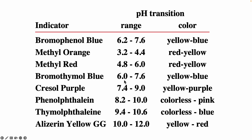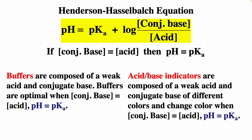Both buffers and acid-base indicators are composed of a weak acid and conjugate base. Buffers are optimal when the conjugate base concentration equals the weak acid concentration, meaning pH equals pKa — so when forming a buffer for a specific pH, look for a weak acid with that pKa. Acid-base indicators change color approximately when the indicator pKa equals the pH at the endpoint. The color will change approximately when the concentration of the base form equals the concentration of the acid form.